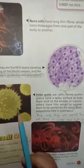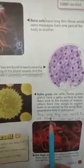Next, we have pollen grains, which are also cells. Some pollen grains have a spiky surface to help them stick to the bodies of insects, which then carry them to other plants to help in pollination. Others have tiny wings to enable them to be carried by the wind. So both adaptations — spiky surfaces and tiny wings — help in pollination.